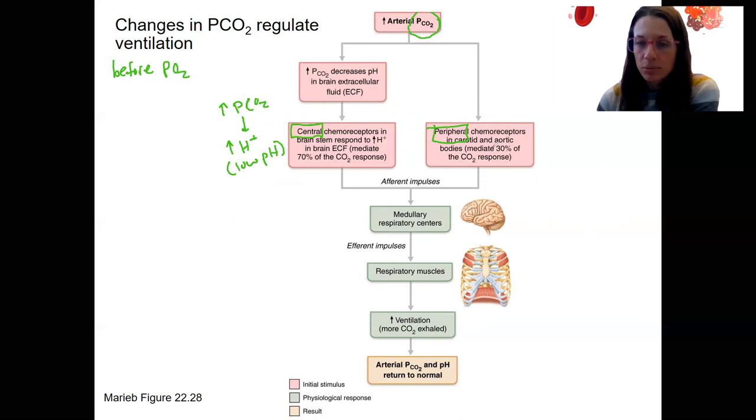Peripheral chemoreceptors in the carotid body and aortic bodies, aortic arch, aortic bodies within the aortic arch, about 30%. So still important. This is the afferent impulse or input signal to the medulla, respiratory centers to the medulla.